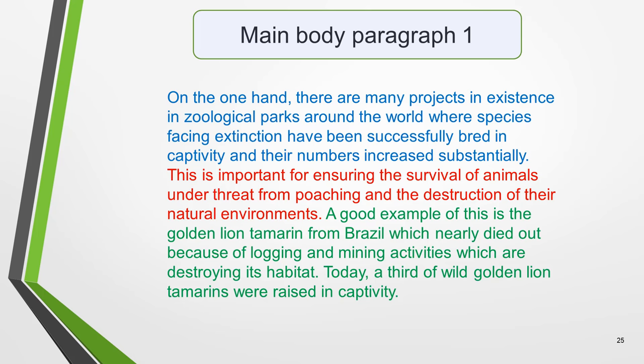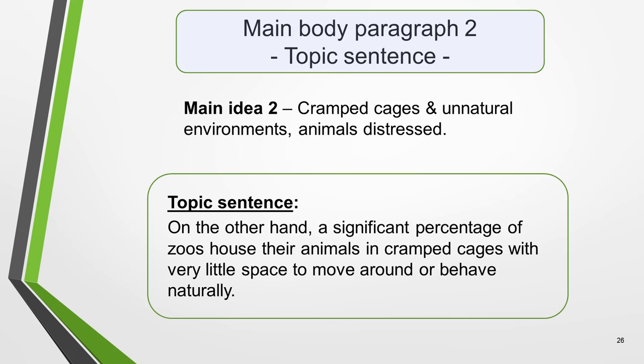We'll now follow the same process with our second main body paragraph. I started main body paragraph 1 with 'on the one hand,' so main body paragraph 2 will naturally begin 'on the other hand.' These are great cohesive devices to use when making a direct contrast between two opposing views — they link ideas together well and can be used in most discussion essays, helping you earn a good score for cohesion and coherence. The main idea is cramped cages, unnatural environments and distressed animals. The topic sentence reads: 'On the other hand, a significant percentage of zoos house their animals in cramped cages, with very little space to move around or behave naturally.'